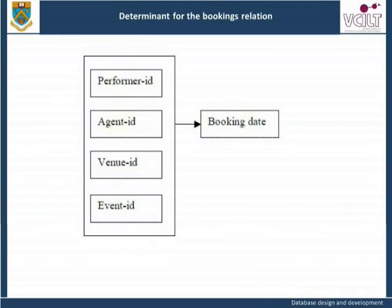This determinacy diagram illustrates the combination of performer ID, agent ID, venue ID, and event ID used as the determinant for the bookings relation.